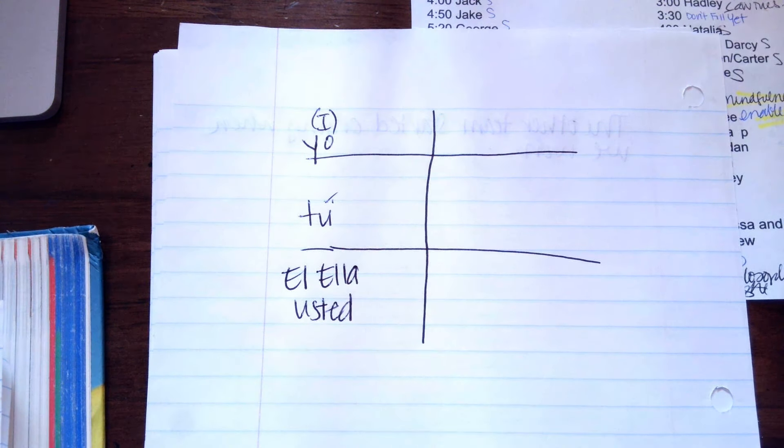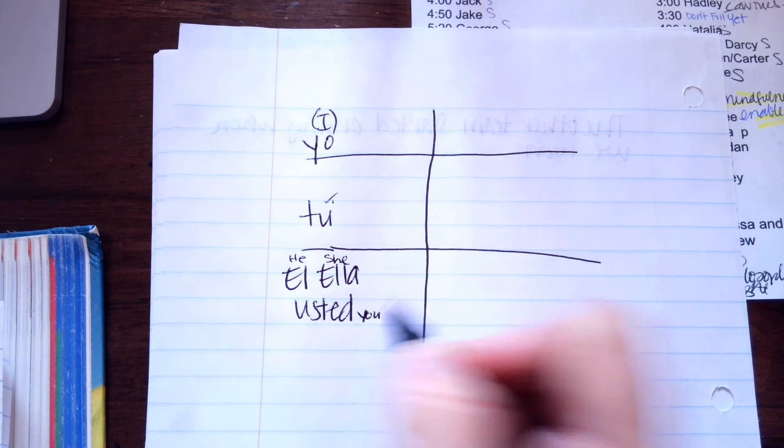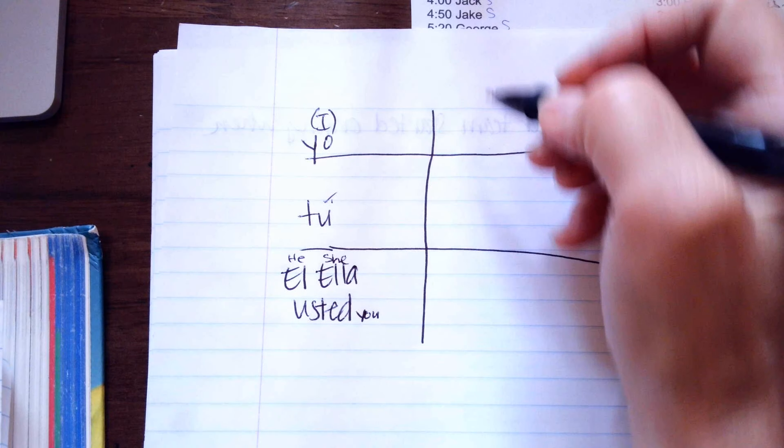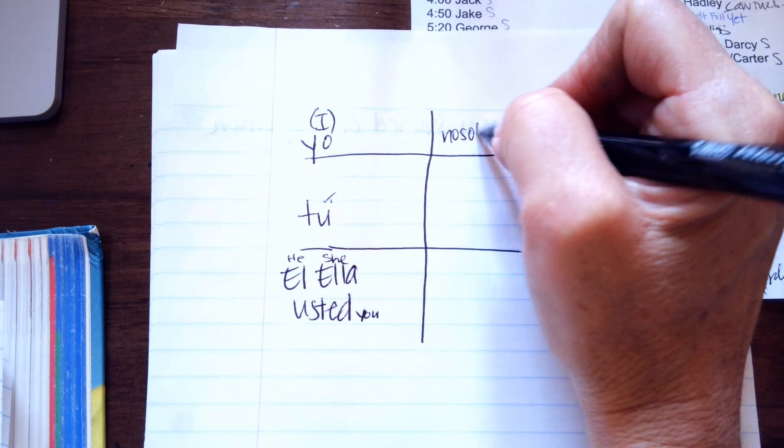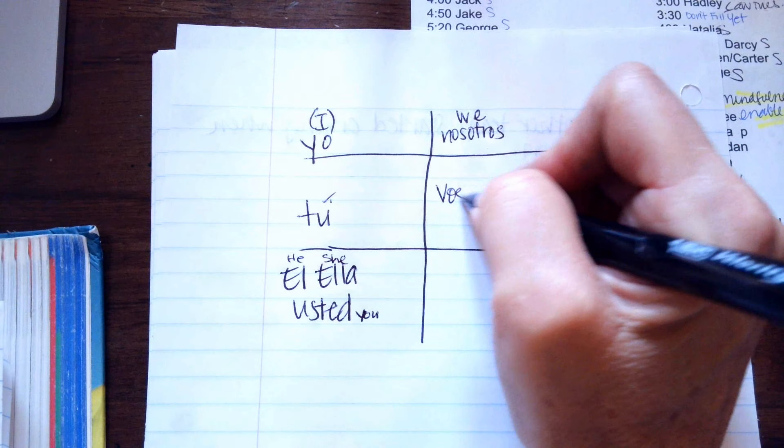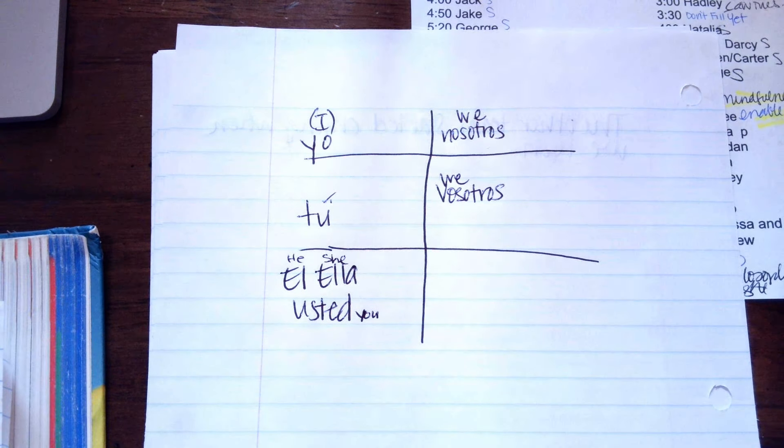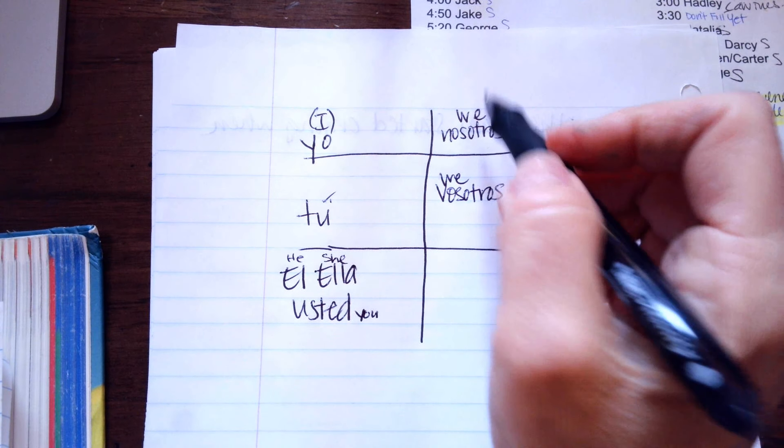And that means he, she, and you. On the other side, we have nosotros, which means we. You have vosotros, which is we, but it's not used very often, so mostly we use this one.